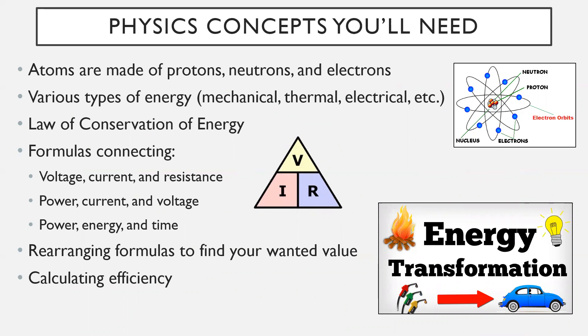The physics concepts you guys are going to need are the fact that atoms are made up of protons, neutrons, electrons. We talked about this in the chemistry video, but it's important to go through again. We'll talk about the various types of energy. We'll talk about the law of conservation of energy. That one is huge. We'll talk a little bit about formulas connecting voltage, current, resistance, power, energy, and time. But more important than that is we're going to talk about rearranging formulas to find your wanted value. Last thing we're going to do today is calculating efficiency.